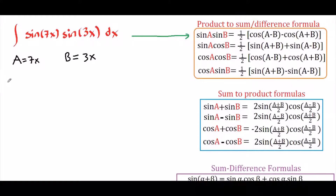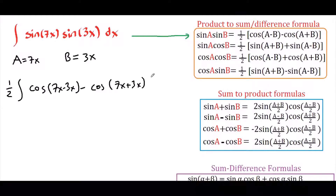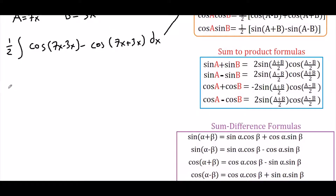We can pull 1/2 in front of the integral sign, and write cosine of 7x minus 3x, which is cosine of 4x, using the first formula. Now we can separate the integrals: 1/2 times the integral of cosine of 4x dx minus the integral of cosine of 10x dx.